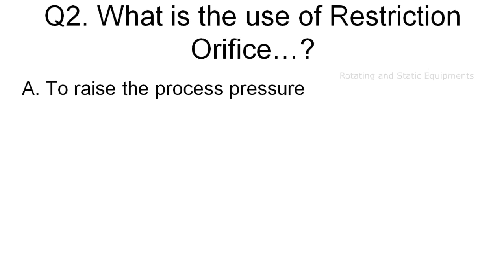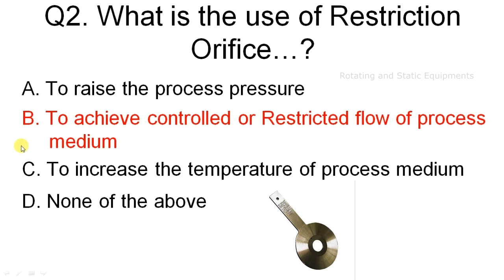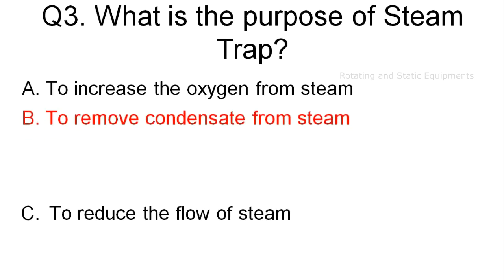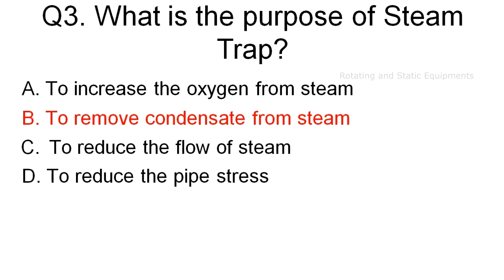Question 2: the correct answer is Option B — the restriction orifice is used to achieve controlled or restricted flow of the process medium. Question 3: the correct answer is Option B. The main purpose of the steam trap is to remove condensate from the steam. Steam traps are automatic valves designed to remove condensate and non-condensable gases from the steam lines.